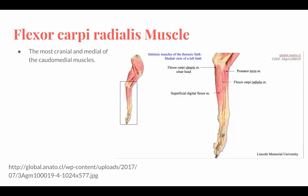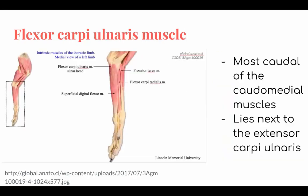Flexor carpi ulnaris muscle. It extends from the middle of the caudal humerus towards the palmar aspect of metacarpals 2 and 3. Its function is to flex the carpal joint. It lies next to the extensor carpi ulnaris and consists of two parts: the humeral head and the ulnar head. Both are distinct throughout their length but both attach to the accessory carpal bone. It extends from the medial epicondyle (humeral head) and the olecranon process (ulnar head) towards the accessory carpal bone. The function is to flex the carpal joint.